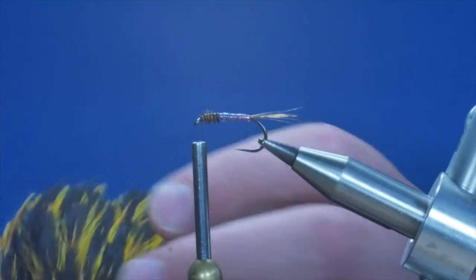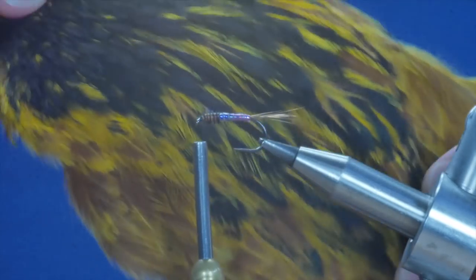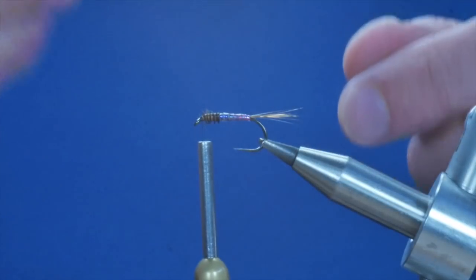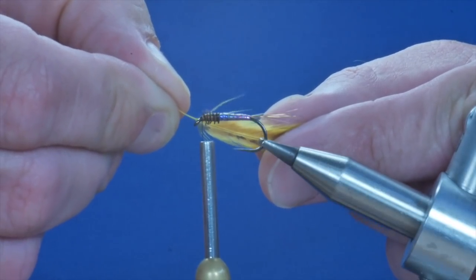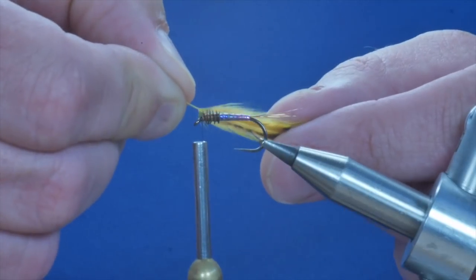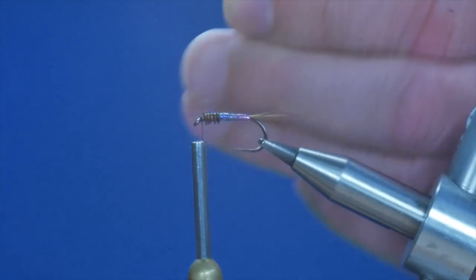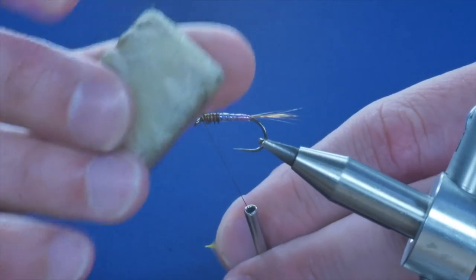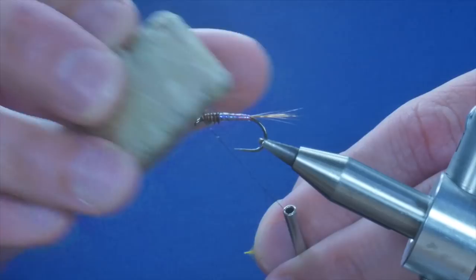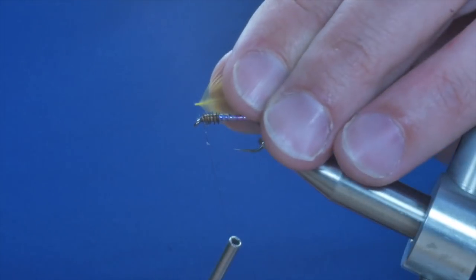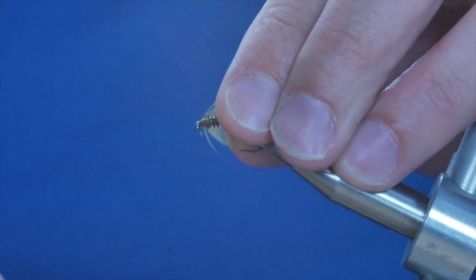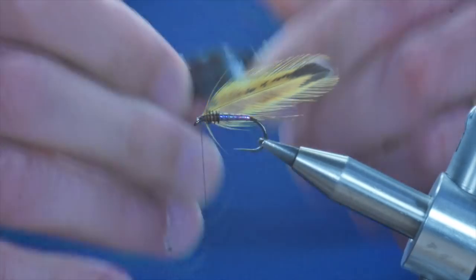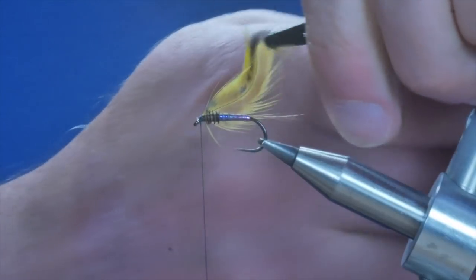For the hackle at the front I am going to use some badger cape, this has been dyed picric, it gives it a yellowy color. I've already selected a feather. What I'm looking for from this feather is to be just slightly over the length of the body of the fly. I'm just going to trim it now so I've got a little bit at the end to catch in. Before you catch in your hackle, always best to add a little bit of wax just for traction, and then dress up your hackle and catch that in with two or three turns. Then catch that in on the end with the hackle pliers and I want two turns out of this feather.